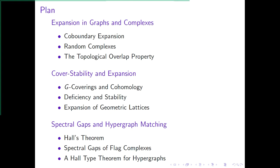Then we'll move to another connection between expansion and cover stability. We will first talk about the classical connection between G-coverings and cohomology, and then we'll see that the two notions — deficiency and stability — which somehow measure the proximity of a map to a genuine covering map are actually connected to high expansion. As an application, we'll talk about the expansion of geometric lattices, which are complexes that occur frequently in combinatorics and topology. Finally, we'll talk about another notion of expansion: an analytic notion called the spectral gap connected to the high dimensional Laplacian, and an application of this notion to hypergraph matching.